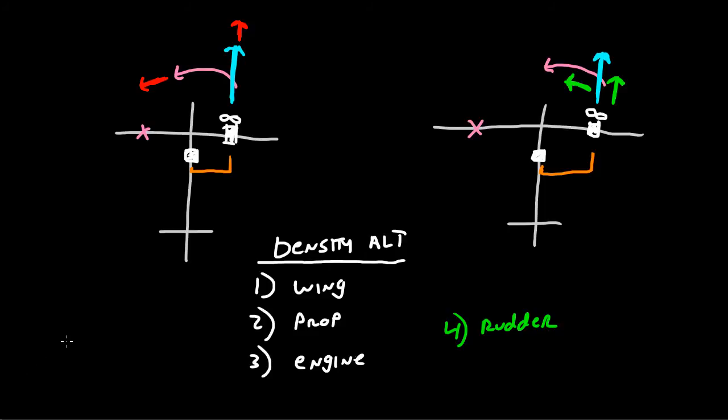But the amount that the rudder is affected is much, much less than the amount that these three are affected. So as you increase in density altitude and the air gets thinner, you've got less air moving over the wing, you've got less air hitting the prop, and you've got less air coming into the engine. However, you've got approximately the same amount of air flowing over the rudder. Or rather, I should say, you've got less air, but the rudder remains effective. It remains effective for longer than the wing, the prop, and the engine do.